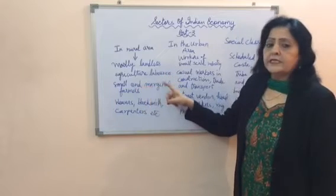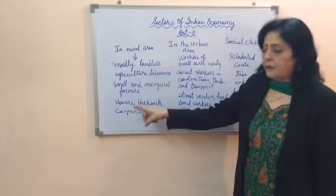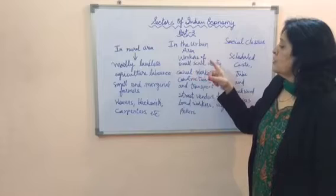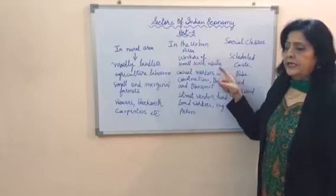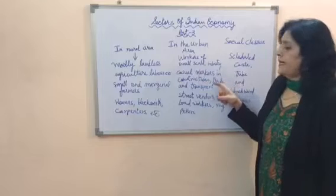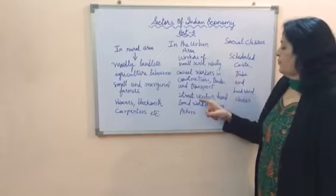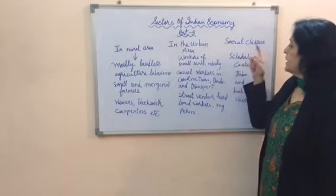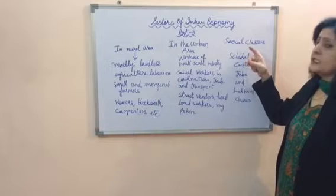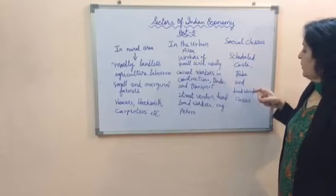In urban areas, unorganized workers include workers in small-scale industry, casual workers in construction, trade and transport, street vendors, head load workers, and rag pickers. The social classes that work as unorganized workers include Scheduled Castes, Scheduled Tribes, and Backward Classes.